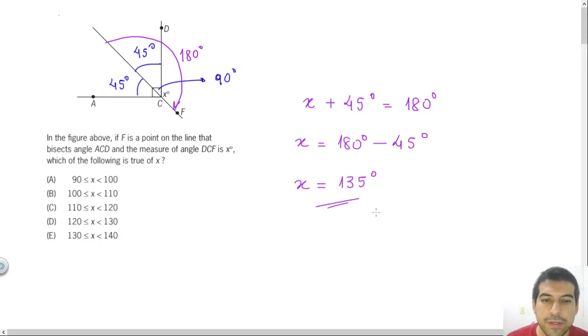So x is 135 degrees, it's between 130 and 140, so letter E will be the answer of the first one.